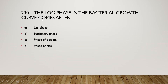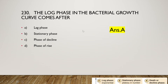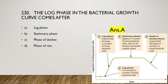Next question: the log phase in the bacterial growth curve comes after lag phase, stationary phase, phase of decline, or phase of rise? The right answer is option A — after the lag phase comes the log phase. In the lag phase there is no increase in number of bacterial cells, but cell size increases. In the log phase there is exponential increase in the number of living bacterial cells.